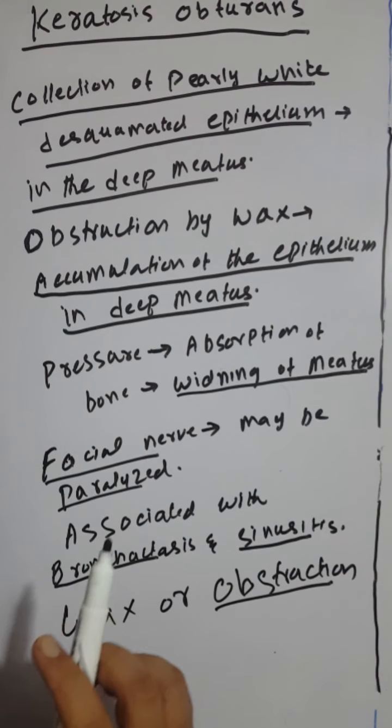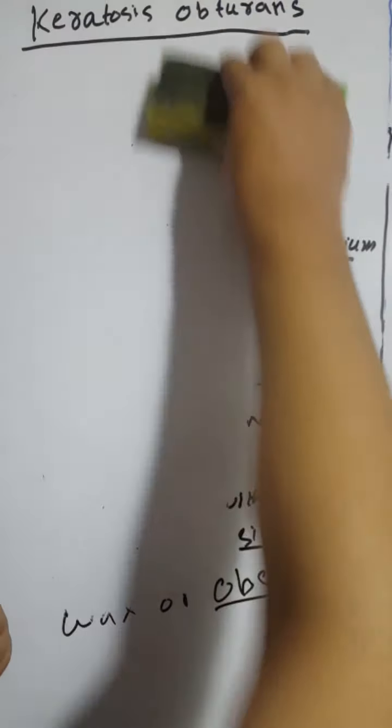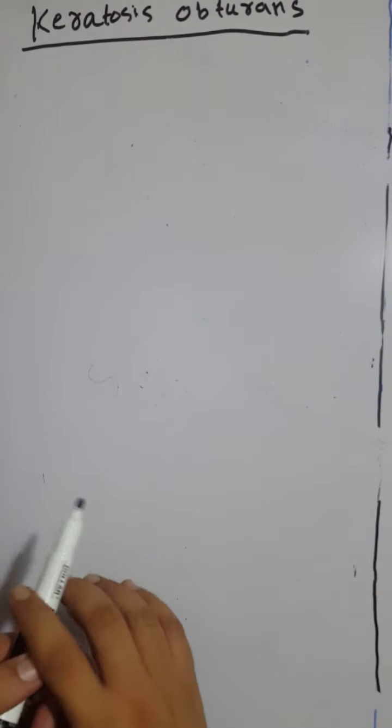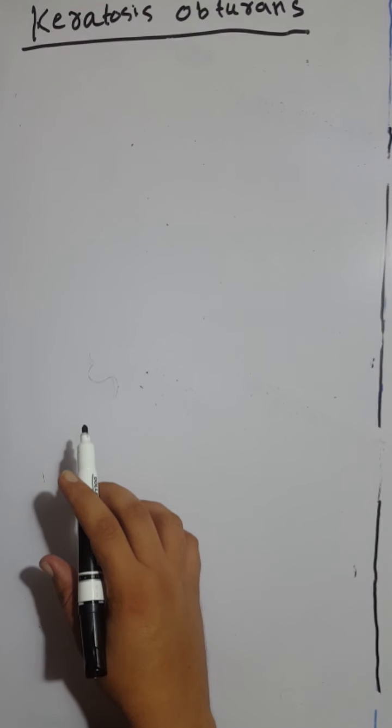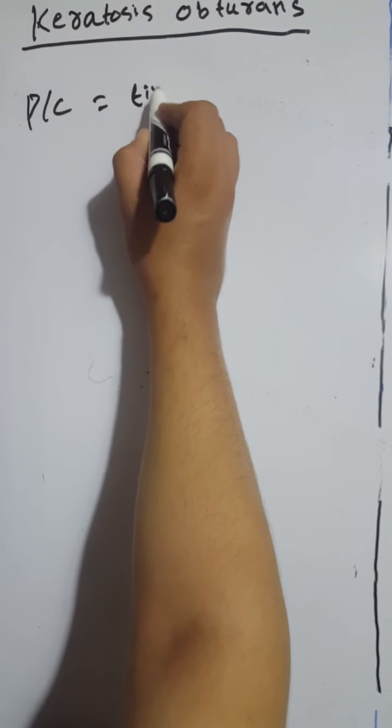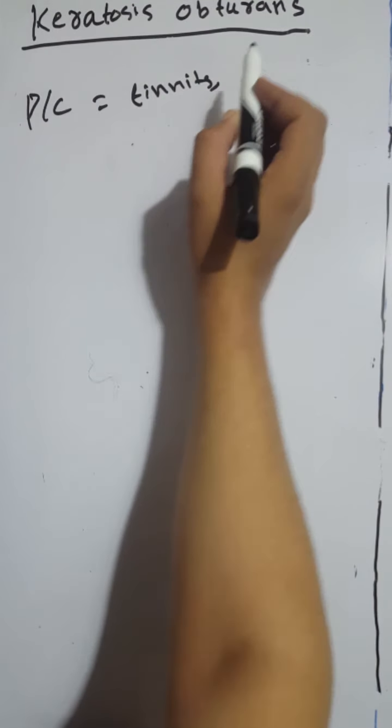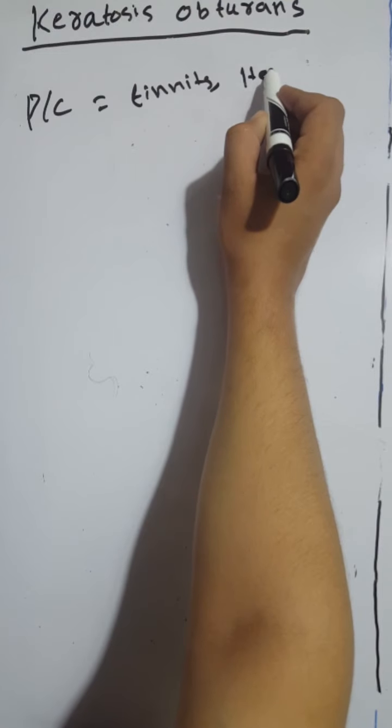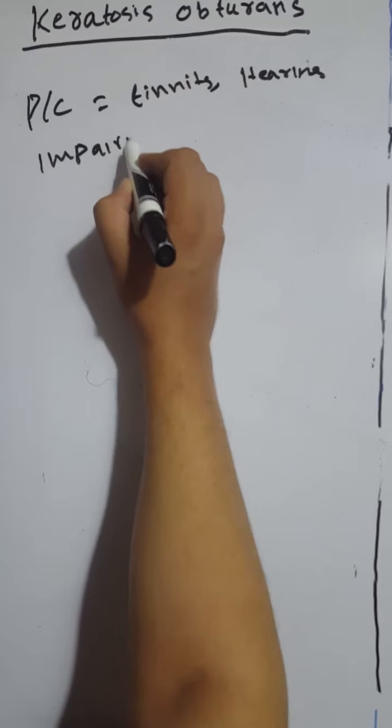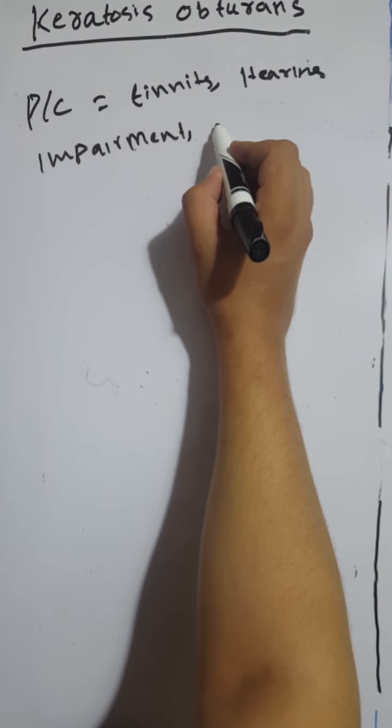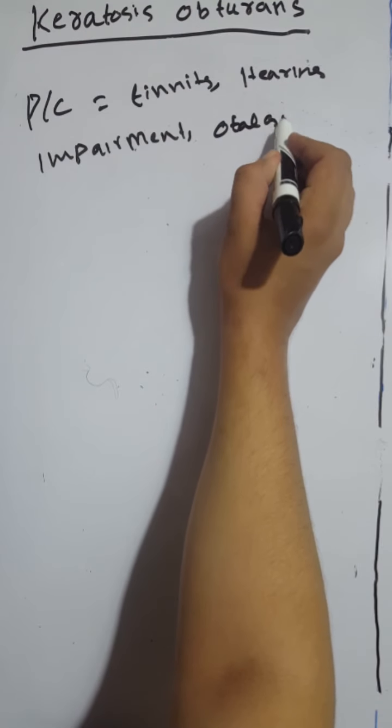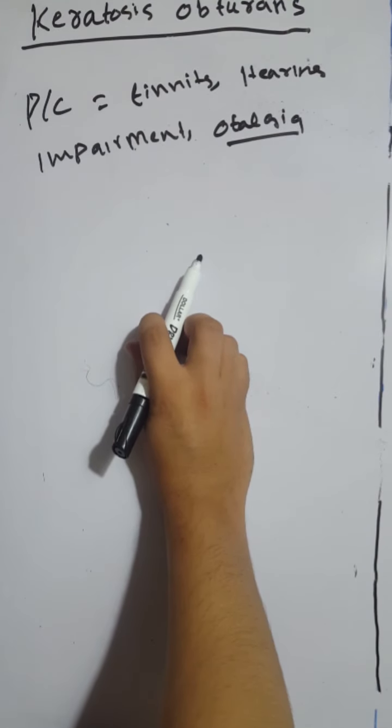Now we discuss the clinical features of keratosis obturans. Clinically, the patient complains of pain in the ear, hearing loss, and tinnitus. The presenting complaints include tinnitus, ear pain, or otalgia.